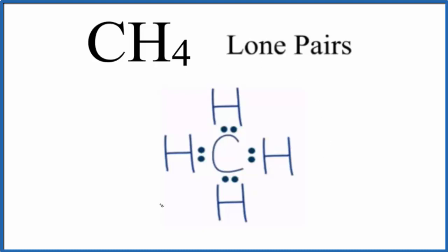When we look at methane, the Lewis structure for methane, these electrons between atoms right here are considered bonding pairs of electrons. This is the chemical bond between the carbon and the hydrogen. So all of the electrons here are involved in chemical bonds. That means we don't have any lone pairs for CH4.